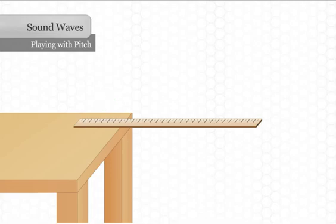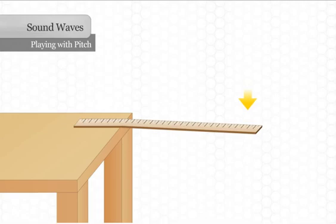Lean on the 7-centimeter segment that is on the counter so it is held firmly in place. Then, with the thumb of your other hand, pluck the end of the ruler that is extending off the counter so it vibrates up and down. Note the sound that it makes.